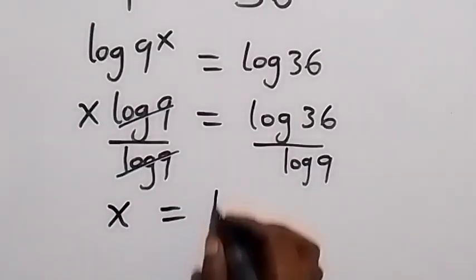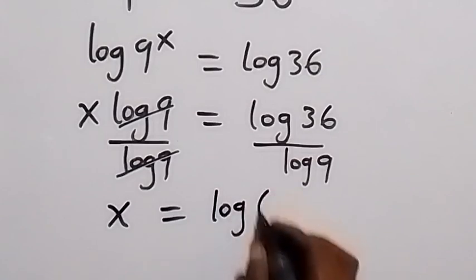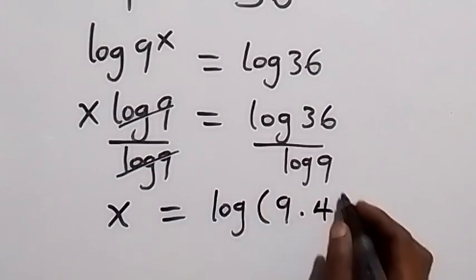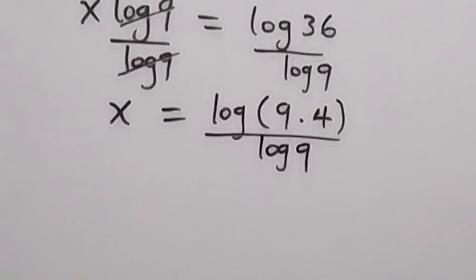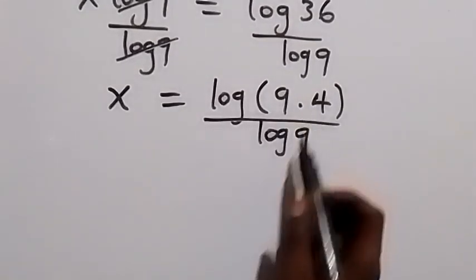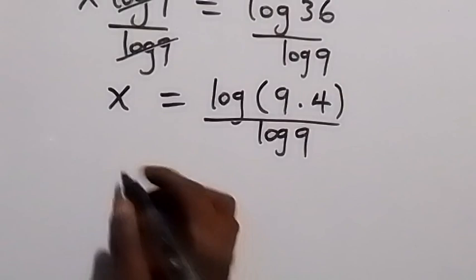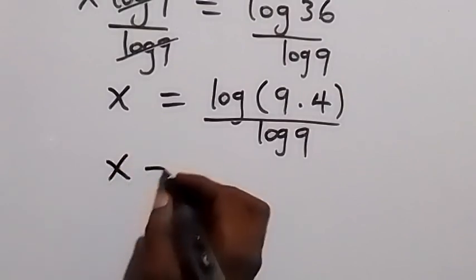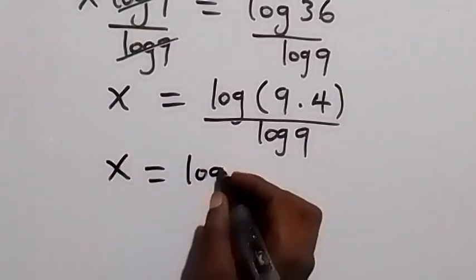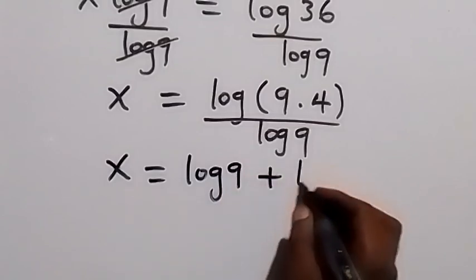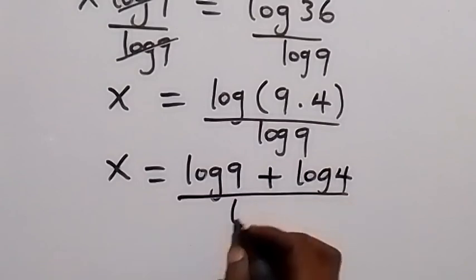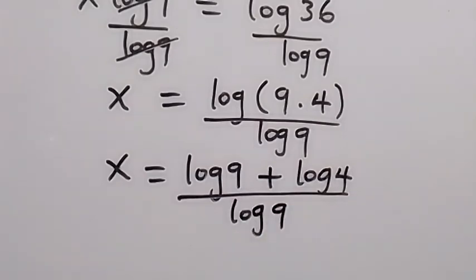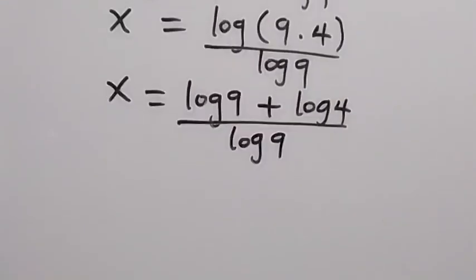Here we can write log 36 as log (9 times 4), then divided by log 9. From there, we can also separate this log from the law of logarithms, and this will become x equals to log 9 plus log 4, all divided by log 9.